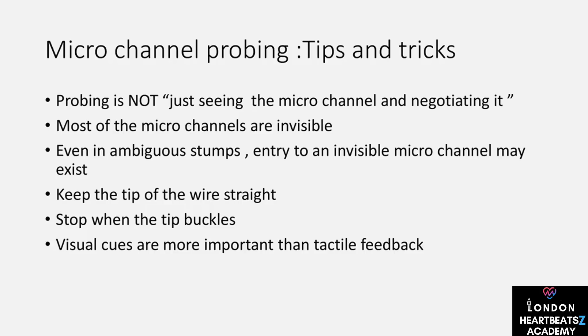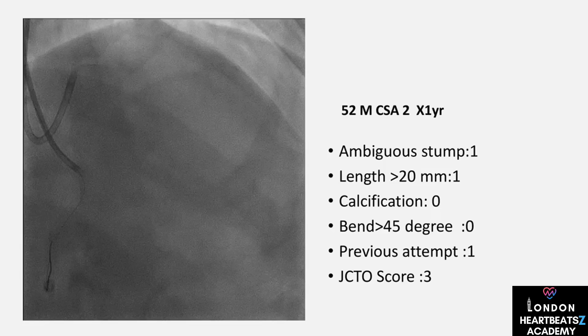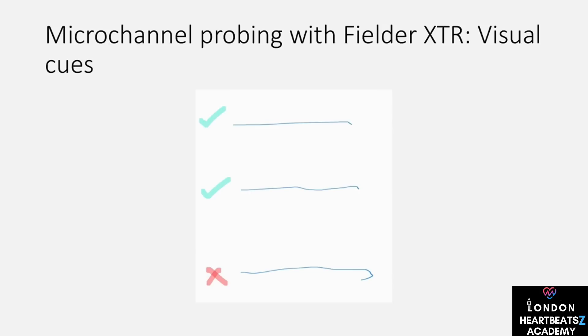Let's pause and think about the importance of reading the angiogram thoroughly — it's like studying a map before a long journey. We need to examine the proximal segment, the origin of the vessel, and any proximal disease. We look at the proximal cap to see if it's ambiguous or well-defined. We search for micro-channels, islands of normal lumen, and assess the tortuosity, calcification, and length of the occlusion, as well as the distal target vessel disease, any branches at the distal cap, the exit angle, and the presence of interventional collaterals.